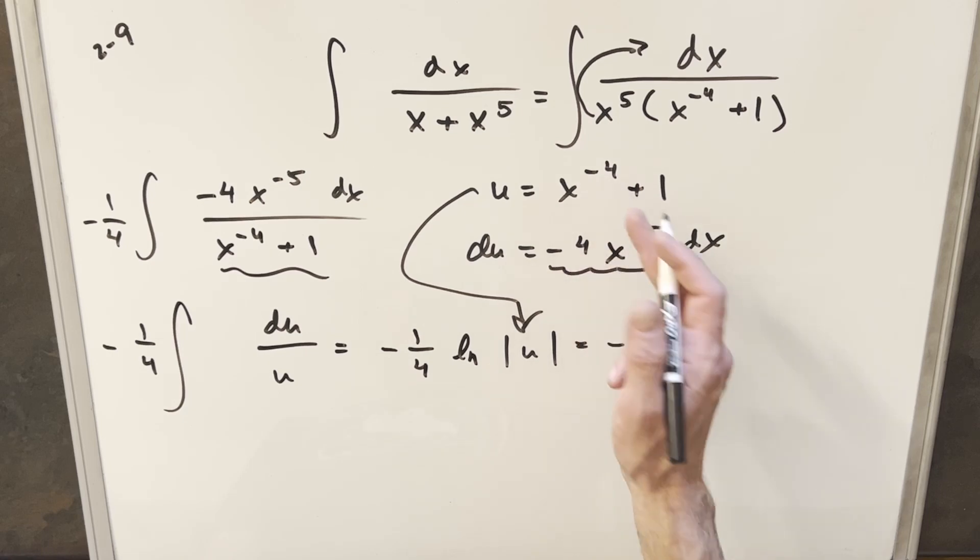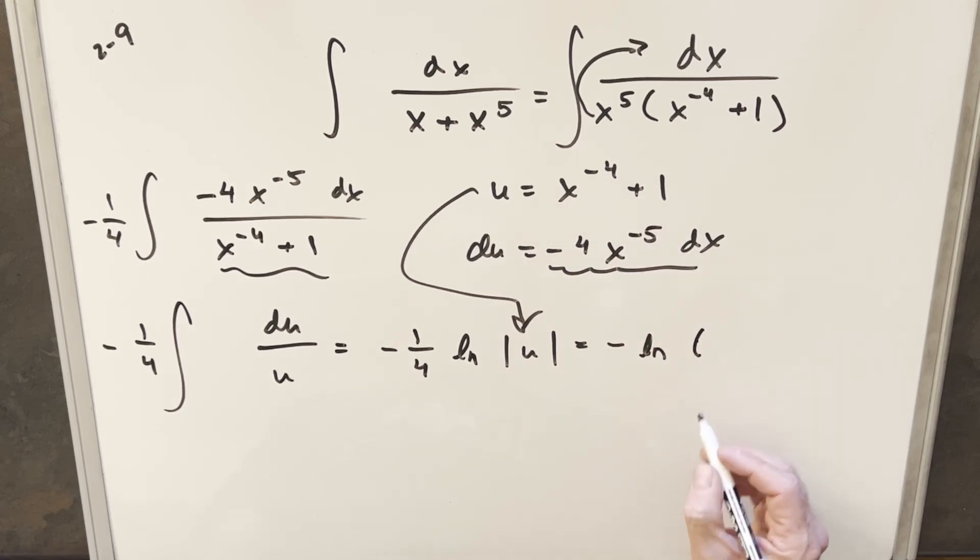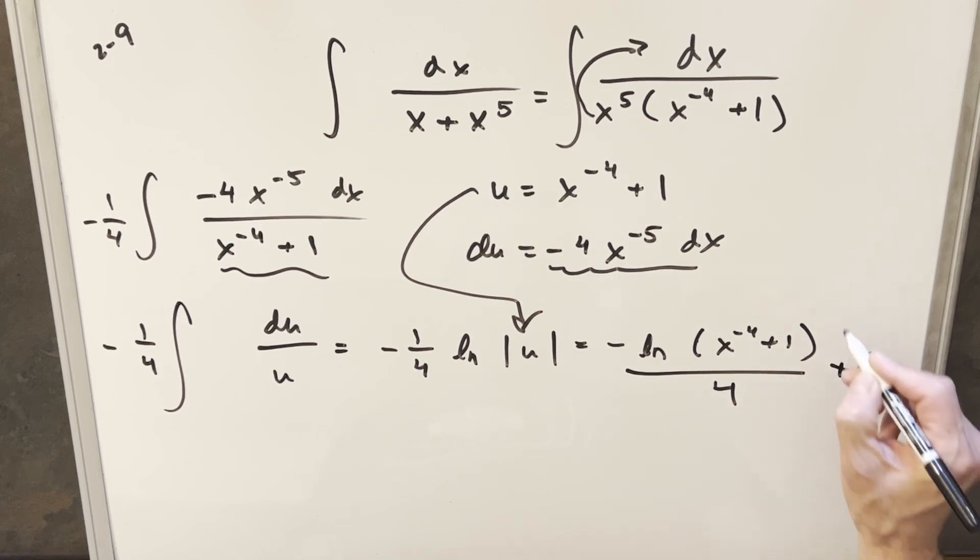Therefore, I'm going to drop my absolute value, just write parentheses, and we'll write it as x to the minus fourth plus one. And let's not forget this four right here. Add a plus c on the end, and that's it.